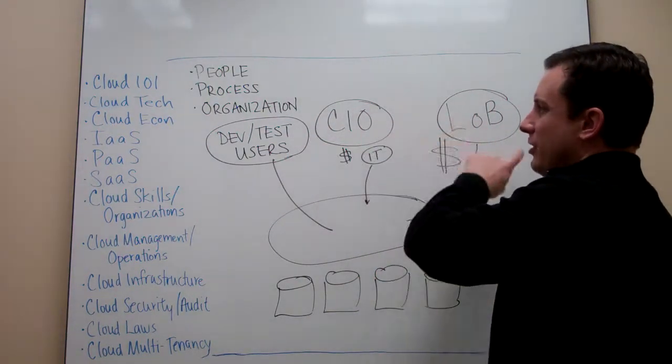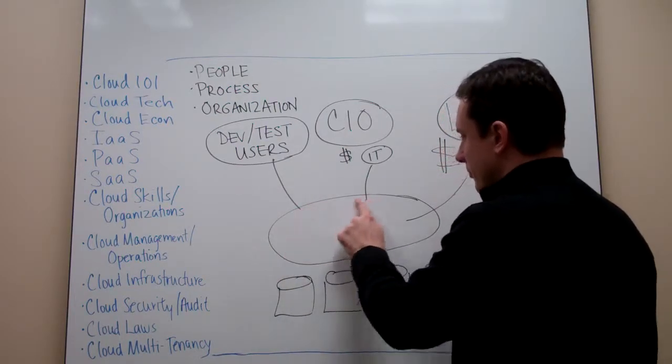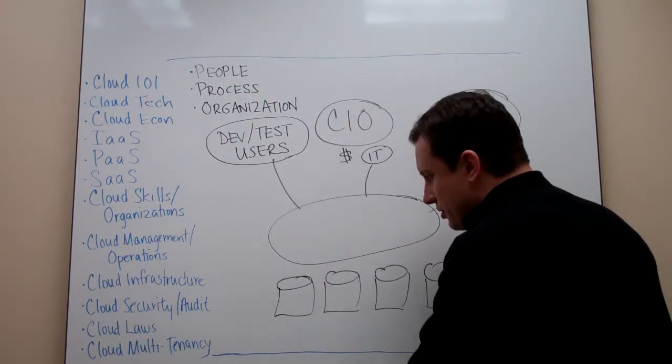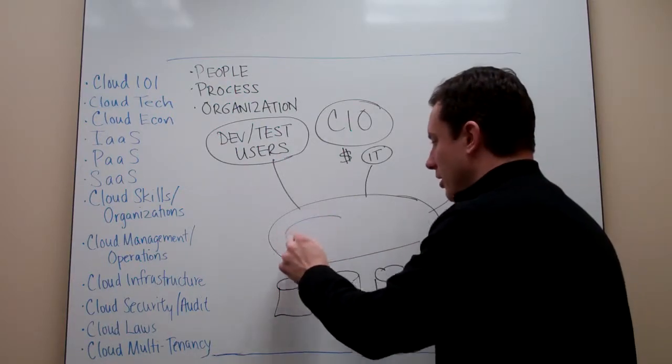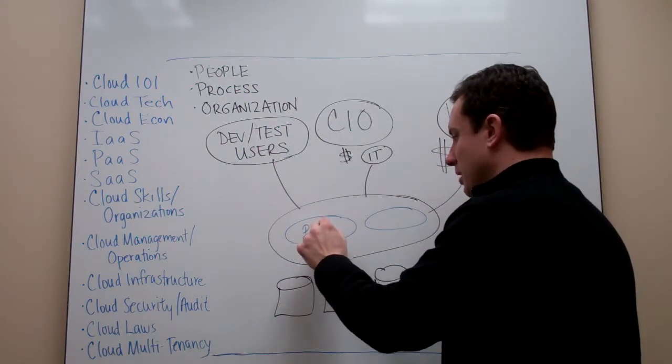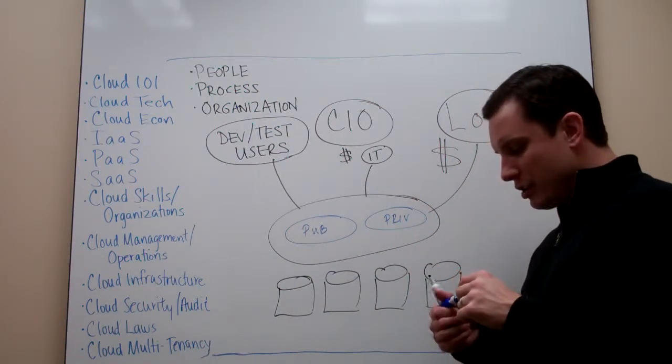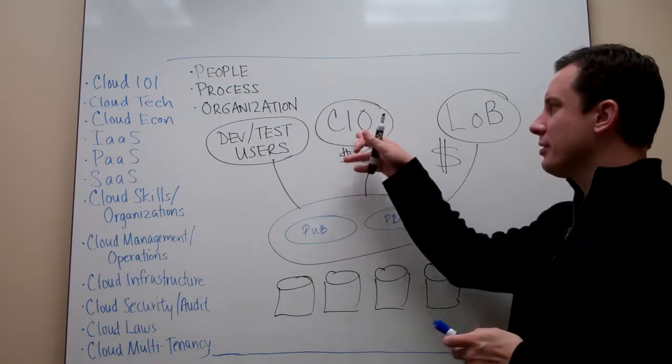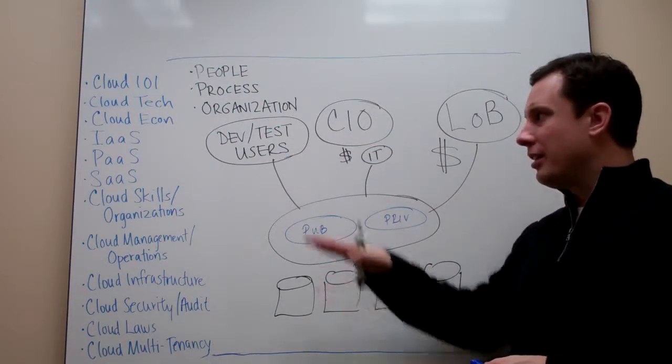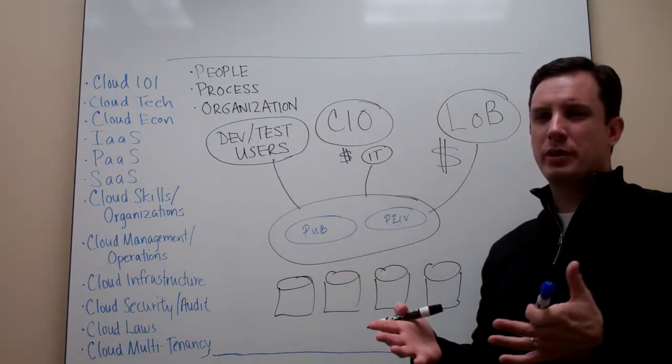Because the change that you have is that the resources you can provide to them are now both internal and external. So they're both public and private resources. And so the question becomes, how do you do this in a way that services your users, services your business, but gives you control and visibility?